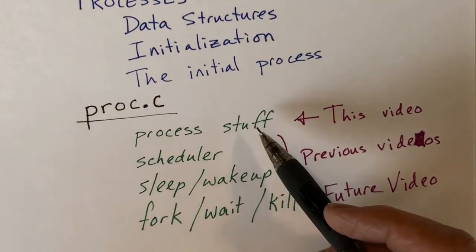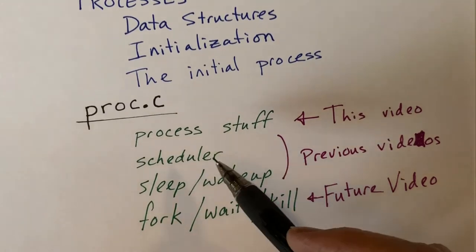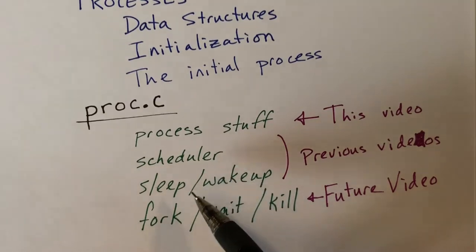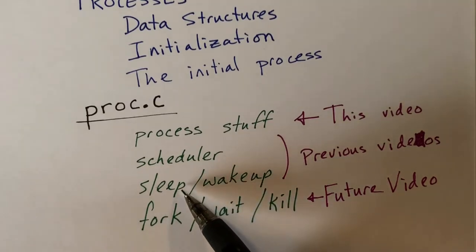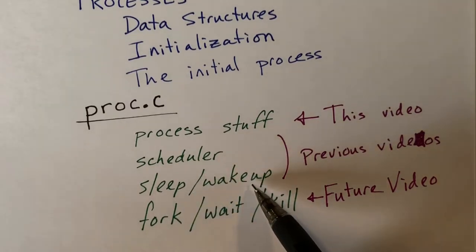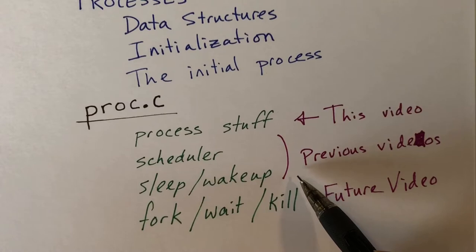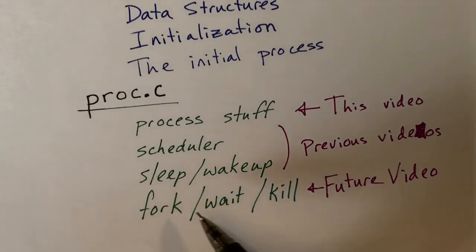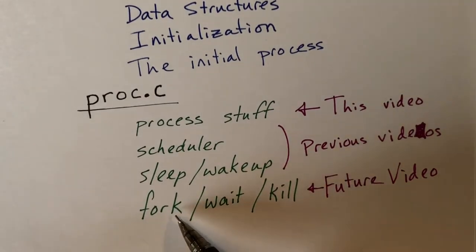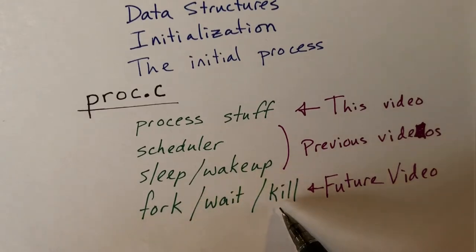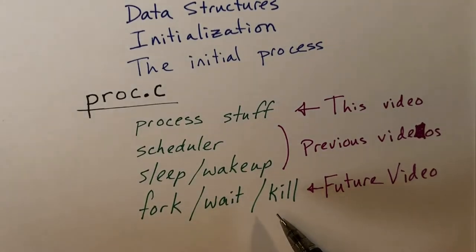In addition to this material that I'll be talking about, proc.c also contains the code for the scheduler, for yield, and so on, as well as the code for the sleep and wake up functions — I've covered these things in previous videos. The file also contains code for functions like fork, wait, and kill, and I'll cover those in a future video.